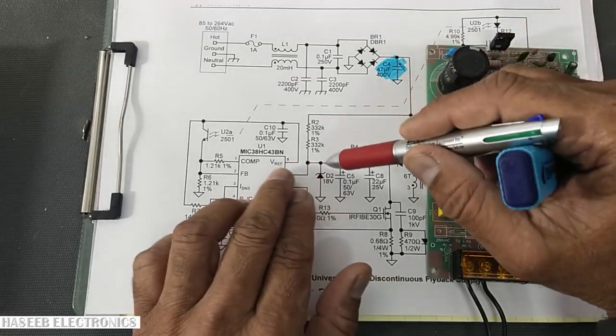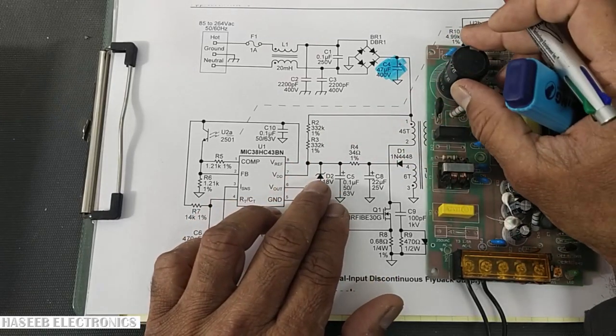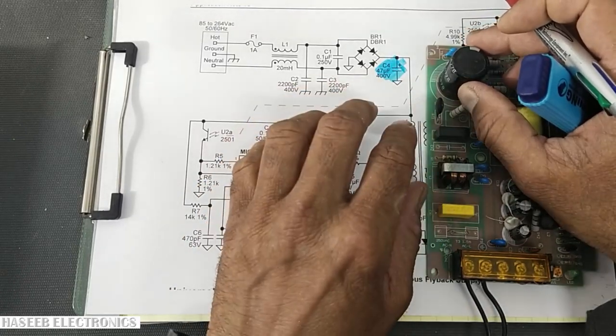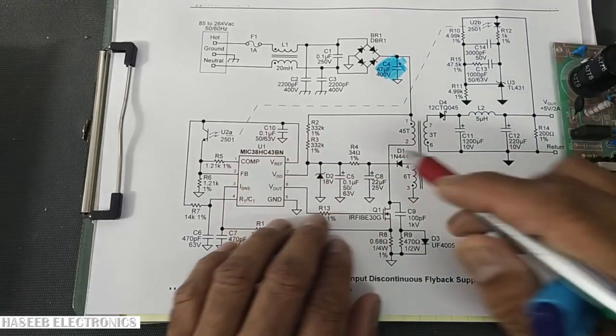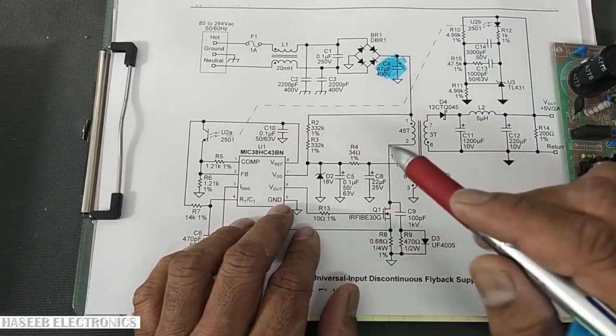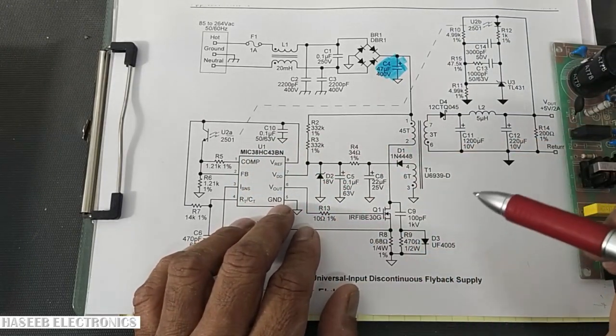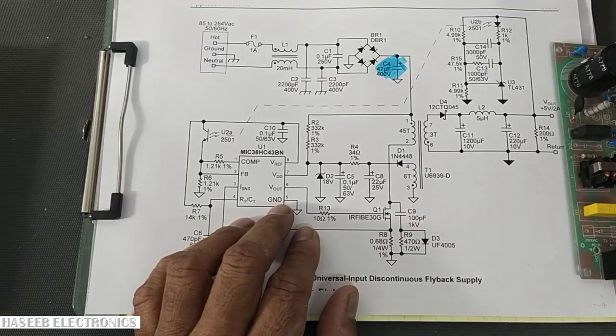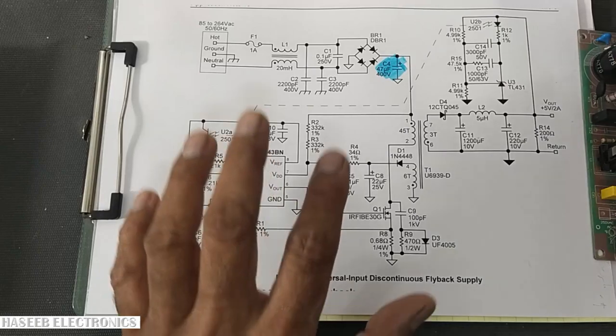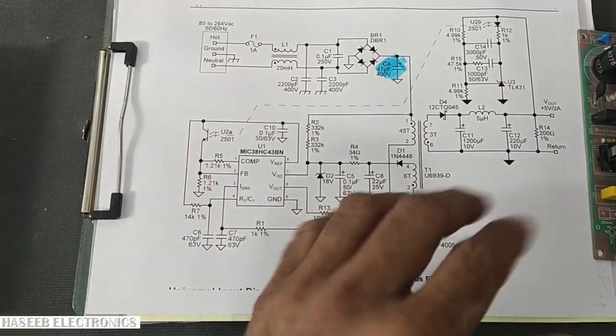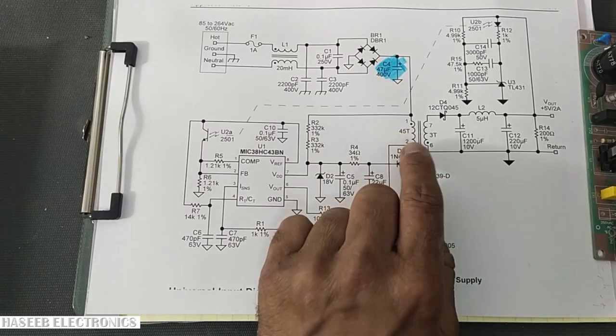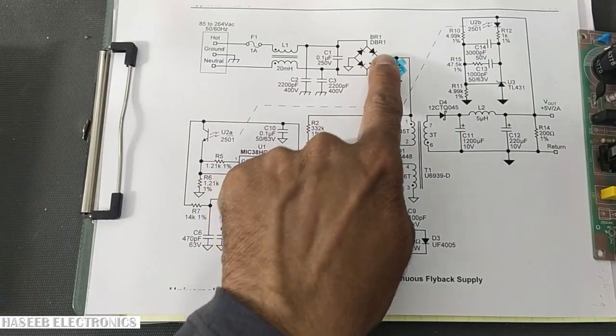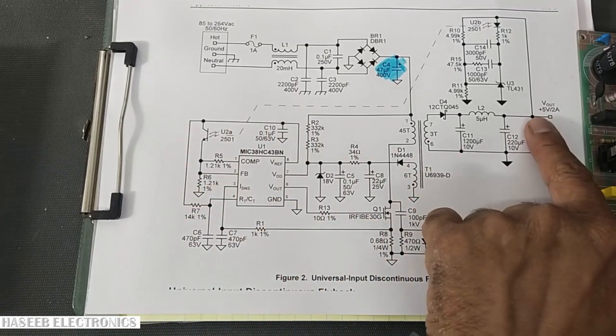If it cannot store the charge properly, it cannot replenish the required current. So in that case, the line voltage in the DC rail will drop and the power supply will go in off mode and it will start rebooting. Basically what is going on in this power supply which our friend told us is that the power supply is switching but it cannot fulfill the requirement of the primary due to two reasons: the first reason from input, the second reason from output.